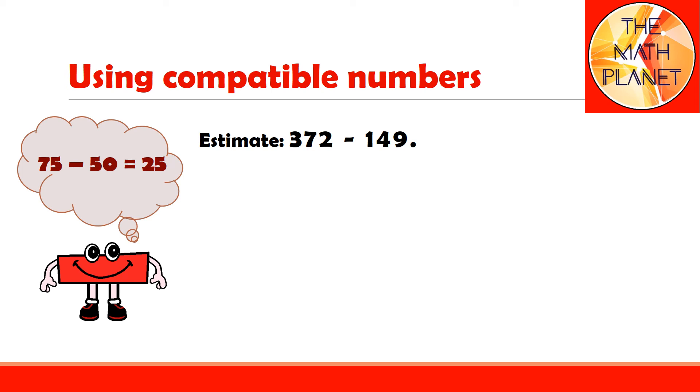372 is close to 375. Also, 149 is close to 150, so I can use this pair of compatible numbers. And the estimate difference will be 375 minus 150 equals 225.